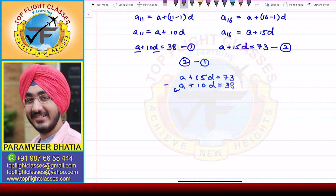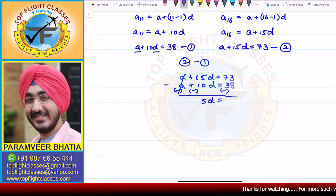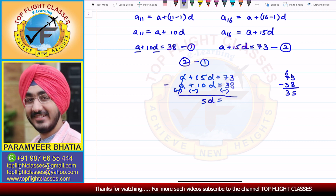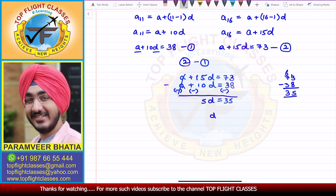When we subtract, the signs change. A minus A cancels. 15D minus 10D gives 5D, and 73 minus 38 gives 35. So from here, D comes out to be 7.